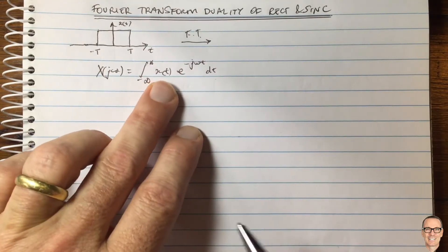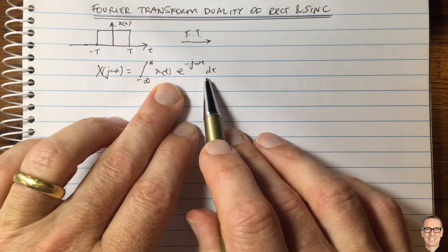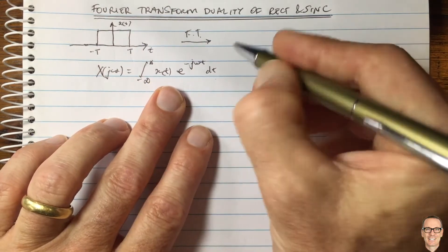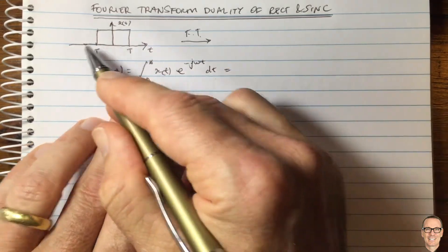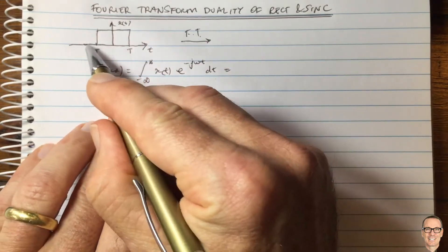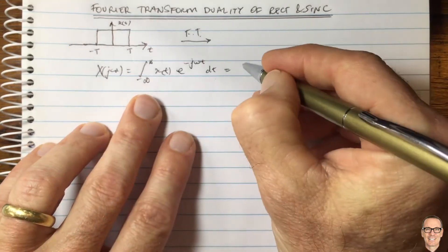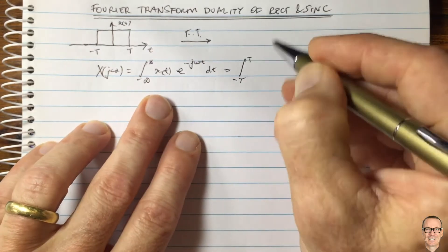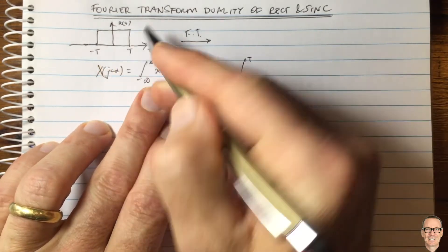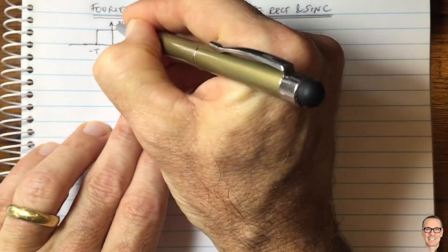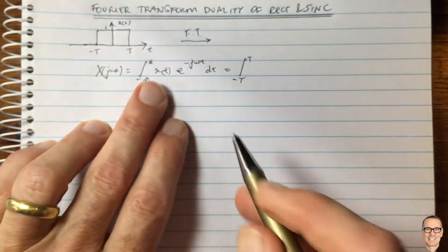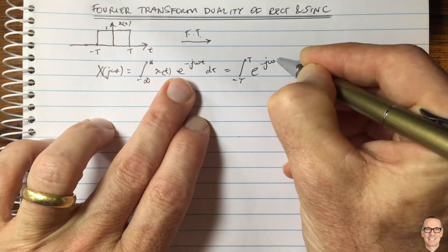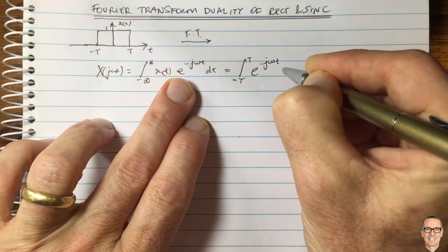For more information about the Fourier transform, there are other videos on the channel — check them out in the link below. In this case, the signal is only nonzero between minus T and T, so the integral only goes from minus T to T. In that range, the function equals one, so we are left with the integral of e to the minus j omega t dt.